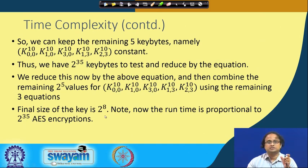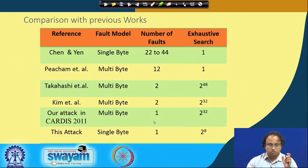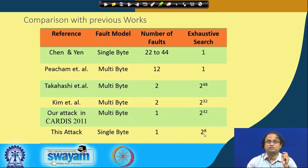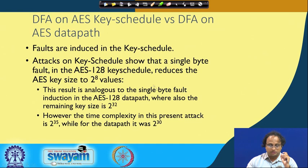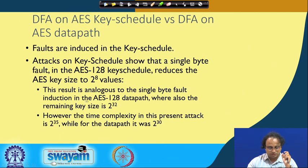The final AES key candidate size is still 2^8, but now the runtime is proportional to 2^35 AES encryptions. Here is a summary of the attack: it requires one fault and reduces the AES key size to 2^8 values with 2^35 key trials required. Comparing the AES key schedule DFA with the AES data path DFA, we have 2^35 versus 2^30 complexity, while the remaining key size is 2^8 — analogous to single-byte fault induction in the AES-128 data path where also the remaining key size is 2^8 (via 2^32, further reduced to 2^8).